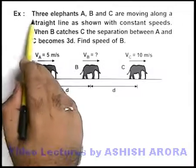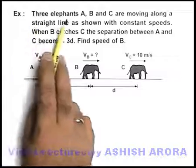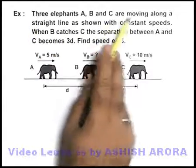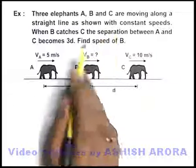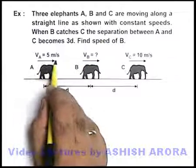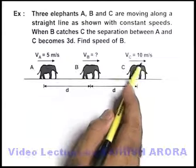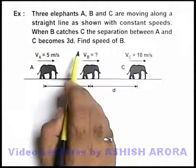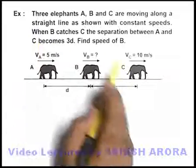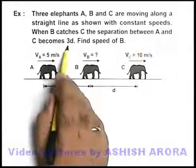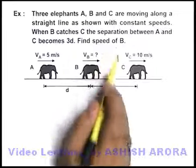In this example, we are given three elephants A, B, and C which are moving along a straight line as shown with constant speeds. A is moving at 5 meters per second, C is moving at 10 meters per second, and the velocity of B is not given. We are given that when B catches C, the separation between A and C becomes 3d, and we are required to find the speed of B.